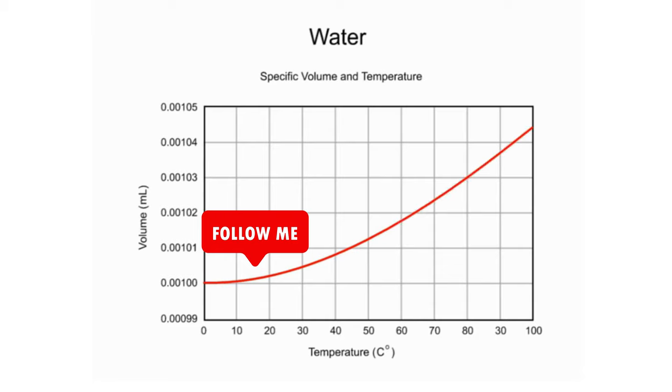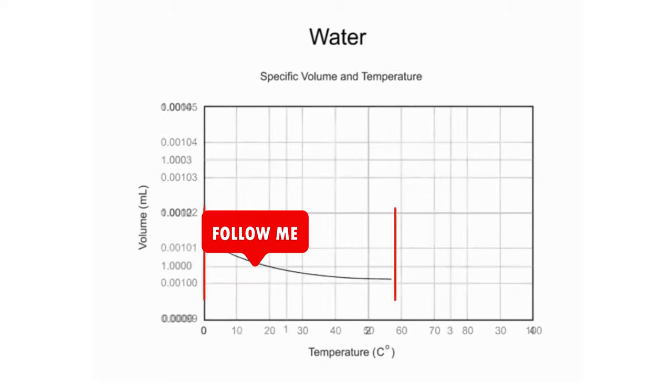However, there is an important anomaly that should be noted. When you zoom in on the graph between 0 and 4 degrees Celsius, you'll notice that there is no expansion in this range. In fact, there's a slight decrease in volume.